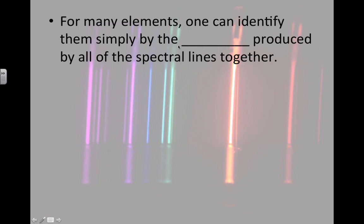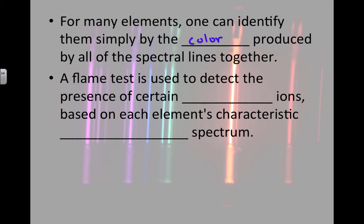For many elements, one can identify them simply by seeing the color that's produced by all of the spectral lines together. Certain metals are well known for the colors that they produced. The flame test is used to detect the presence of certain metal ions based on that element's characteristic emission spectrum.